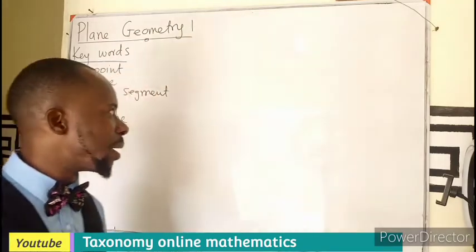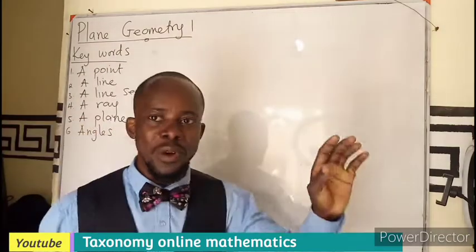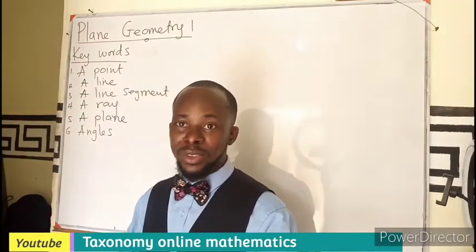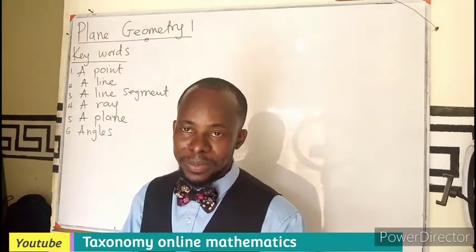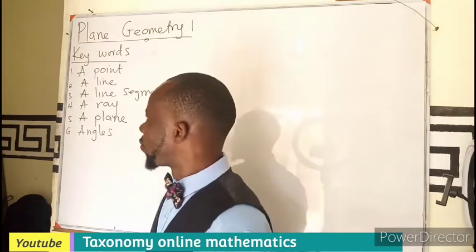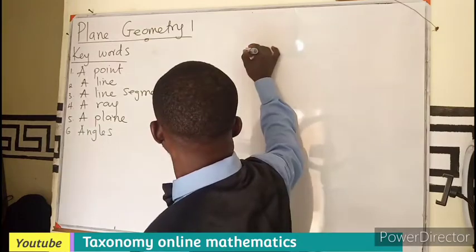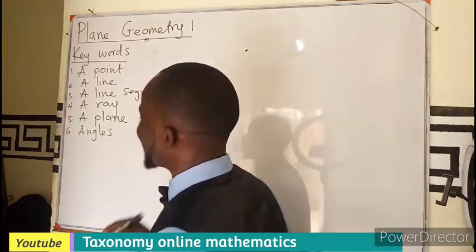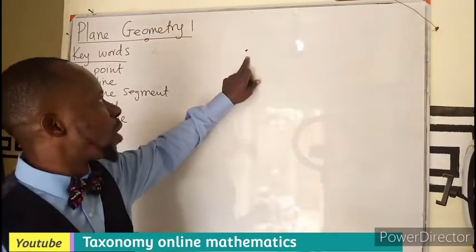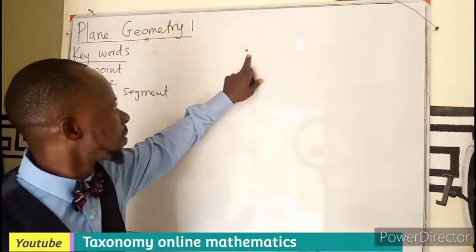The first one is a point. When we talk of a point, we are just referring to the position — a fixed location. So if I have this, we can call this a point. So this is point A, point B, point C.